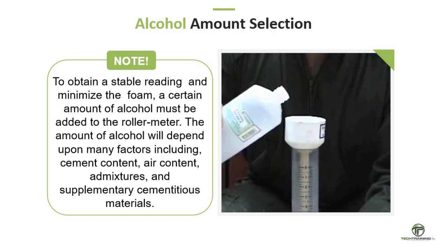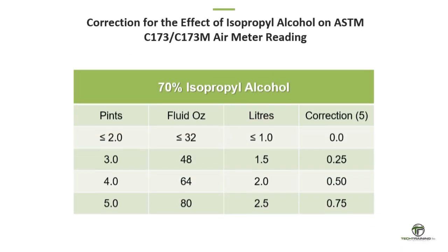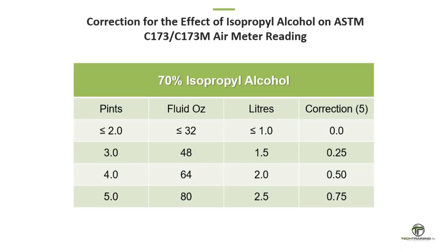To obtain a stable reading and minimize foam, a certain amount of alcohol must be added to the roller meter. The amount will depend on factors including cement content, air content, admixtures, and supplemental cementitious materials. This table shows the correction necessary for the effect of isopropyl alcohol on the air meter reading. If less than two pints or one liter is used, there is no adjustment. However, at three pints or two liters, 0.25% should be subtracted from the air meter reading. As the amount of alcohol used increases, its effect on the air meter reading also increases.